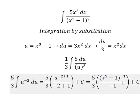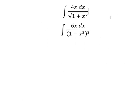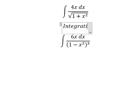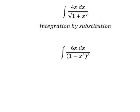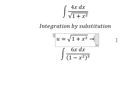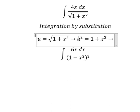Question number two. We need to use integration by substitution. I will put u equals to the square root of 1 plus s squared. We square both sides, then do the first derivative for both sides.